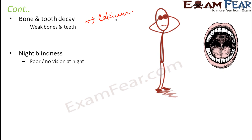Night blindness is when a person cannot see during night time — he has very poor vision or almost no vision at night. This happens because something goes wrong inside your eye. Vitamin A is the nutrient that takes care of the health of your eye, so when there is deficiency of vitamin A, that results in poor functioning of the eye and night blindness.